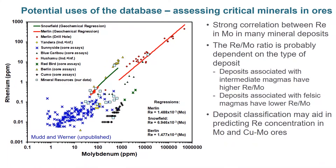Another use of the database is assessing critical minerals in ores. This diagram from unpublished data by Mudd and Werner illustrates the relationship between molybdenum and rhenium, showing that rhenium increases as molybdenum increases. Importantly, the rhenium-to-molybdenum ratio is strongly dependent on deposit type: deposits associated with intermediate magmas have higher rhenium-to-molybdenum ratios, whereas deposits associated with felsic magmas have lower ratios. We can use the classification scheme and this relationship to predict the rhenium concentration of both molybdenum and copper-molybdenum ores.